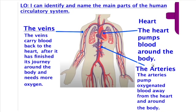As you saw in yesterday's video, the blood carries water, oxygen, and nutrients to all of the organs in the body. The arteries carry that oxygenated blood — the blood that's got oxygen in it. And when that oxygen is used up, the veins carry that blood back to the heart so it can pass through the lungs and get oxygenated again.